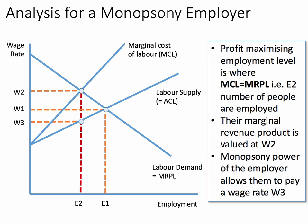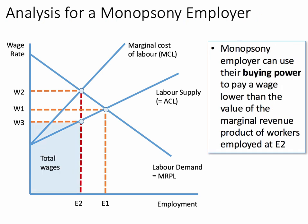So they're paying W3 — a relatively low wage — and W3 is less than W2, which is the marginal revenue product of those workers. So the total wages paid by the monopsony employer is W3 multiplied by E2, the wage multiplied by employment — that shows total wages. But here's the really key part of the diagram.